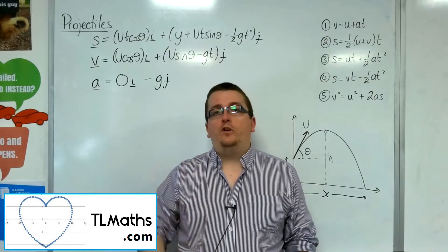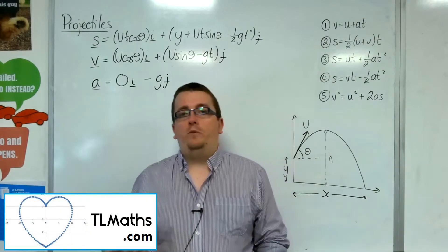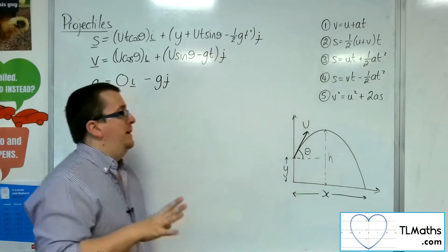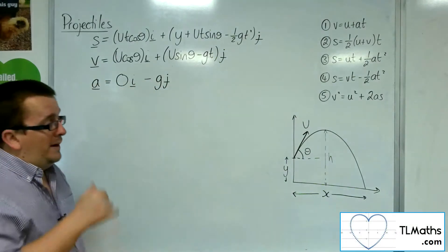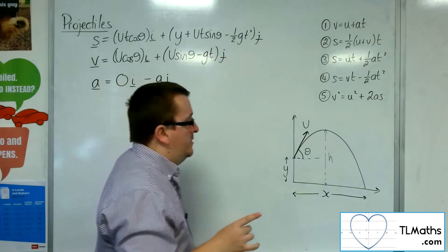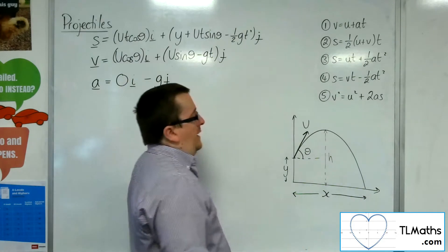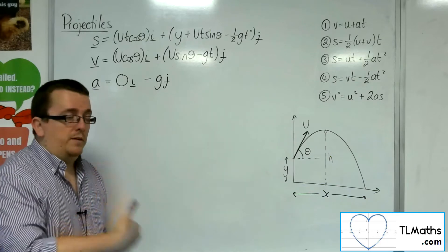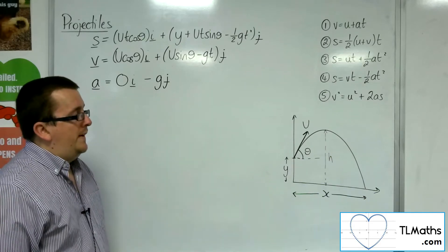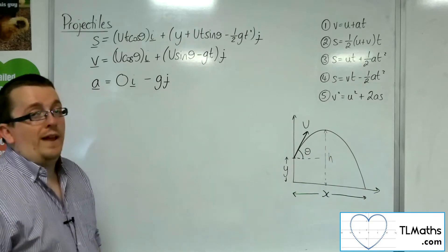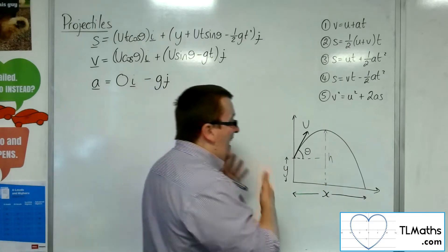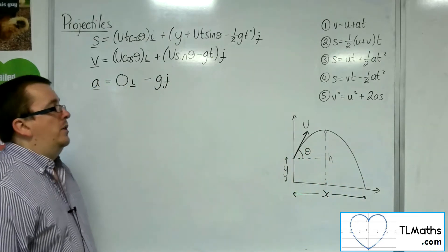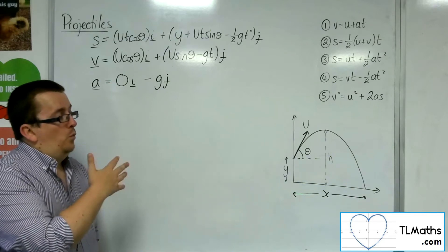In the previous video, we looked at finding a formula for the greatest height. We're now going to look at a formula, or try to derive a formula, for the greatest horizontal distance that the particle will travel, or at least the horizontal distance that it travels. So that value of x.